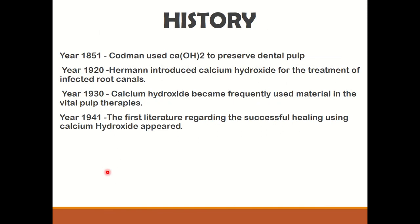Regarding the history: in the year 1838, Nygren used calcium hydroxide for the treatment of fistula dentalis. In 1851, Codman used calcium hydroxide to preserve the dental pulp. Herman in the year 1920 introduced calcium hydroxide for the treatment of infected root canals. By the year 1930, calcium hydroxide became a frequently used material in vital pulp therapies. The first literature regarding successful healing with calcium hydroxide appeared in the year 1941.